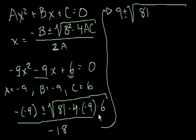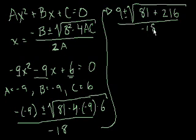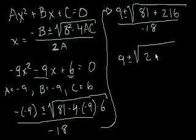and then 180 plus another 36 is 216, plus 216. All of that over 2a, which we already said is minus 18. So we simplify that more. That's 9 plus or minus the square root, 81 plus 216, that's 297, and all of that over minus 18.